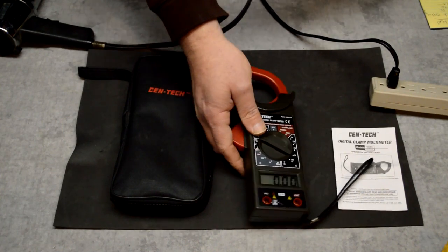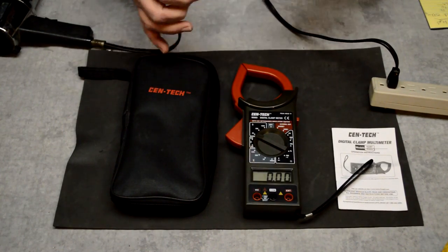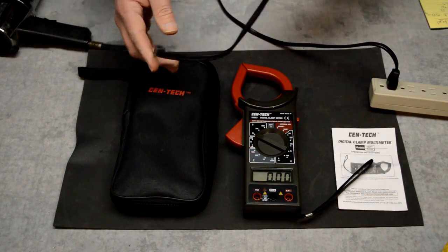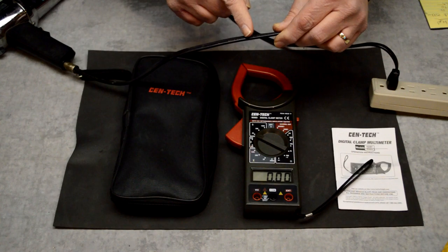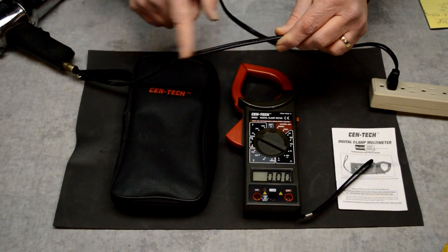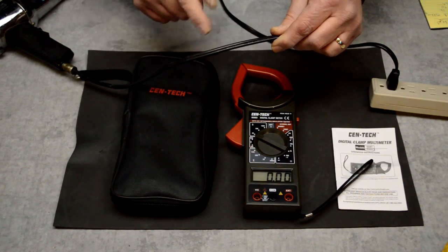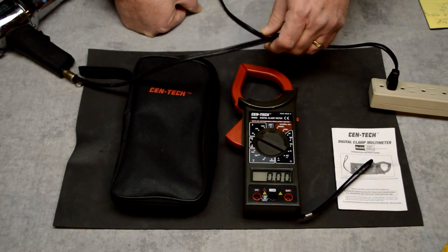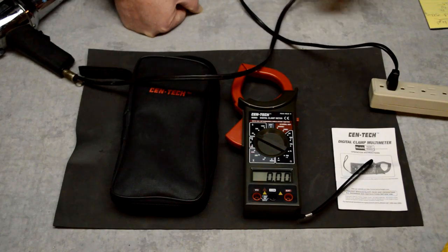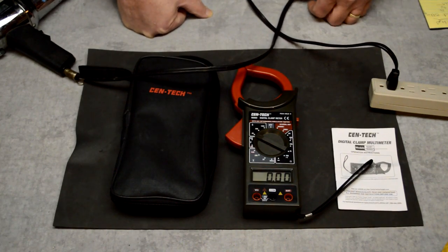And the reason why is this is incorrect to use this clamp meter this way. Any clamp meter, this would be incorrect. What you need to do is isolate these two wires that are inside this jacket. With AC current, you have opposing current and it cancels itself out and it gives you an incorrect reading. So the way that you want to do it is separate them.